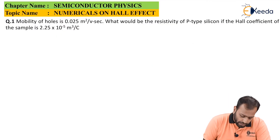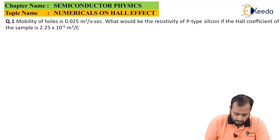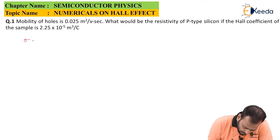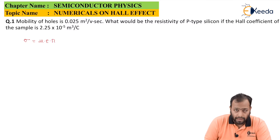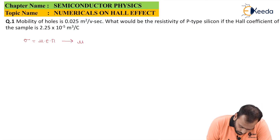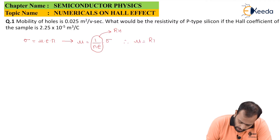The first question says that mobility of holes is 0.025 meter square per volt second. What would be the resistivity of p-type silicon if the Hall coefficient of the sample is 2.25 × 10⁻⁵ meter cube per coulomb? We'll be using the formula σ = μ × e × n. Since this is for holes you can add suffix h, but it's not required. So μ = 1/(n·e·σ), and since 1/(n·e) = R_H, therefore μ = R_H × σ.